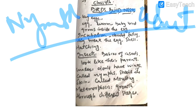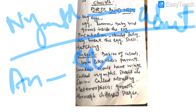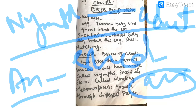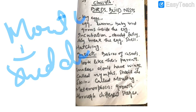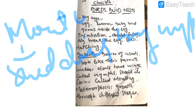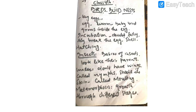These babies are called nymphs. For a nymph to grow into an adult, it has to shed its skin many times. The process by which a nymph sheds its skin in order to become an adult is called molting. Molting is the process of shedding of skin by nymphs in order to become an adult.